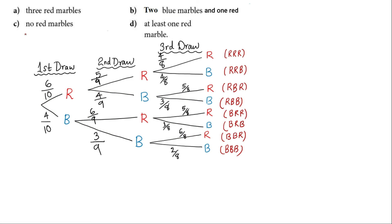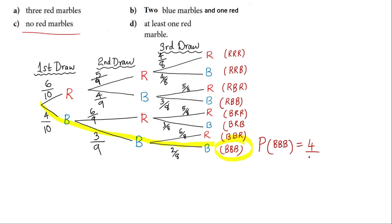Moving to part C: probability of no red marbles. This is the only branch where you have no red marbles — they are all blue. The probability of no red is the same as the probability of all blue: 4/10 × 3/9 × 2/8, which equals 24 over 720.